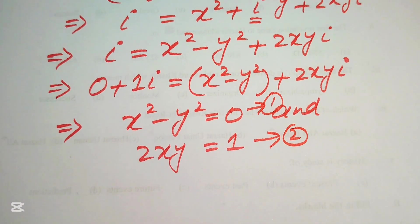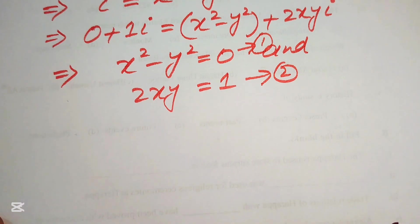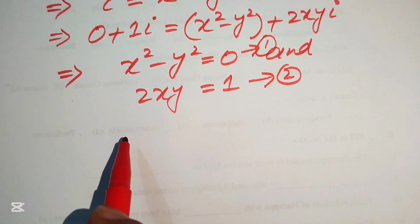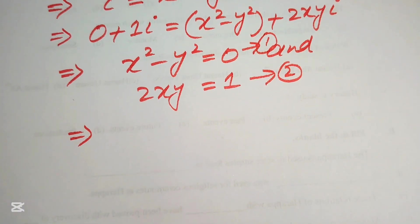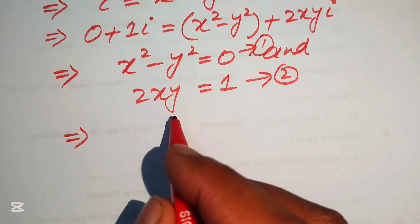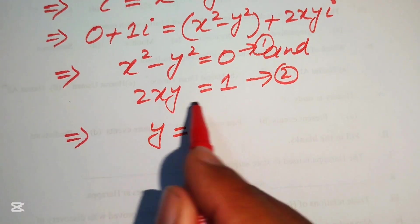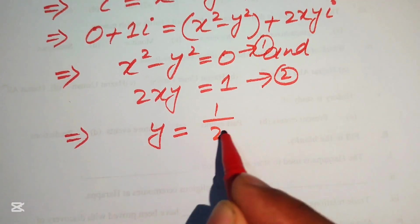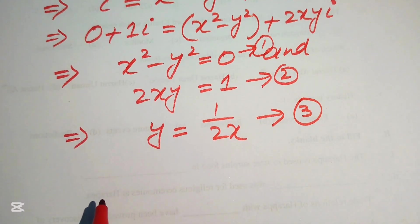Focusing on equation two, 2xy = 1, we solve for y by moving 2x to the right-hand side. This gives y = 1/(2x), which we call equation three.